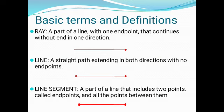Basic Terms and Definitions. Ray: it is a part of a line with one endpoint that continues without end in one direction. Line: it is a straight path extending in both directions with no endpoints. Line Segment: it is a part of a line that includes two endpoints.